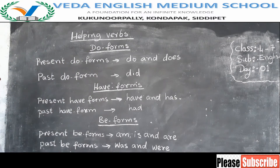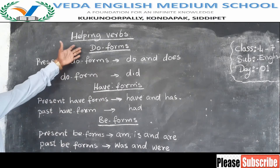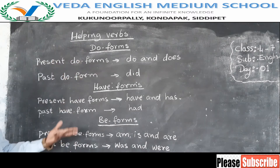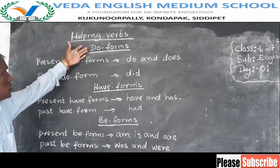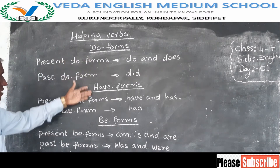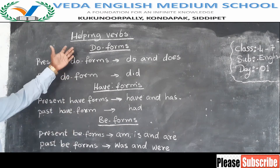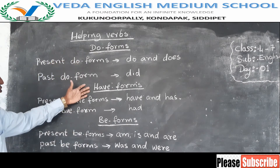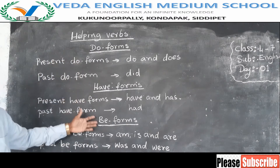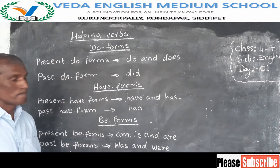Especially, we have three verbs: do, have, and be. So we have do forms, have forms, and be forms. We use these forms to make different tenses.